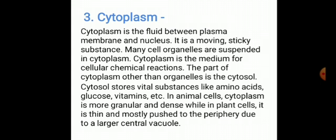Children, in the last video we studied about cell wall and plasma membrane. Animal cells lack a cell wall, but in plant cells the cell wall is elastic and forms a strong coat around the cell membrane. Plasma membrane is a thin, fragile, elastic covering that separates cell components from the outer environment.